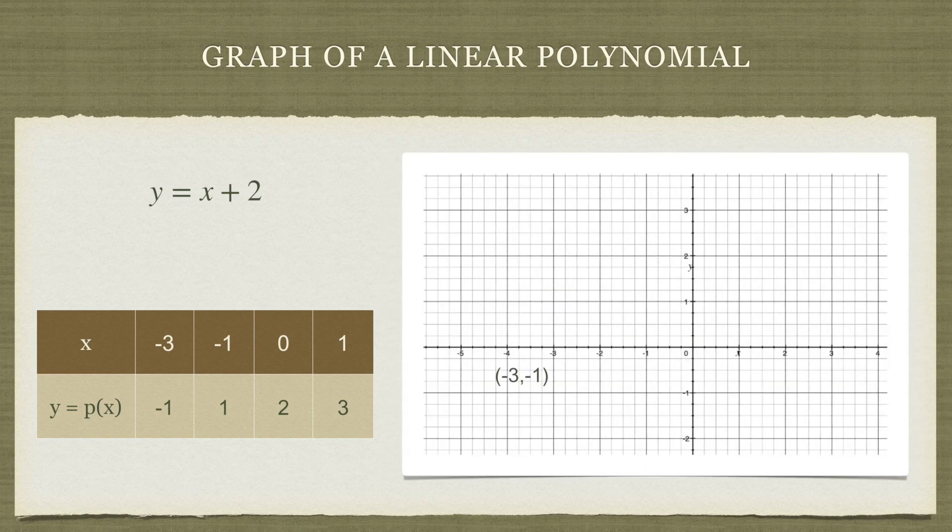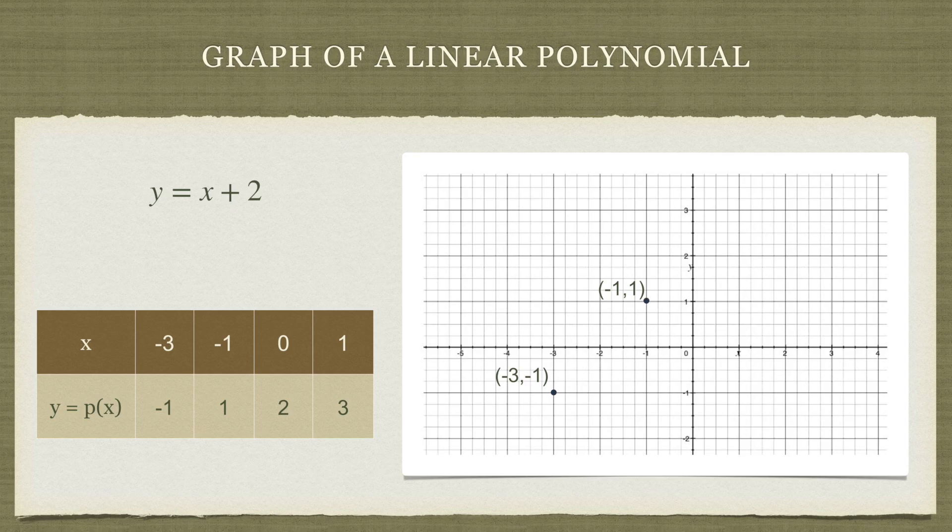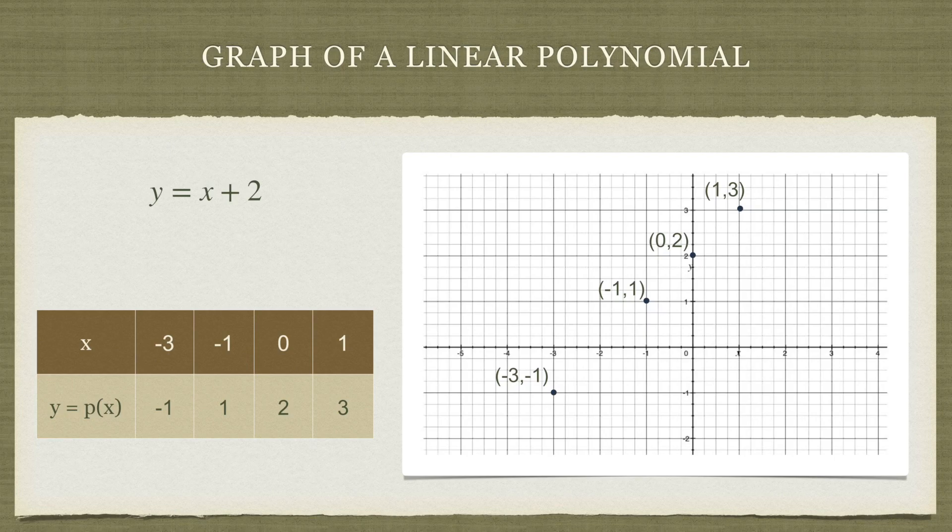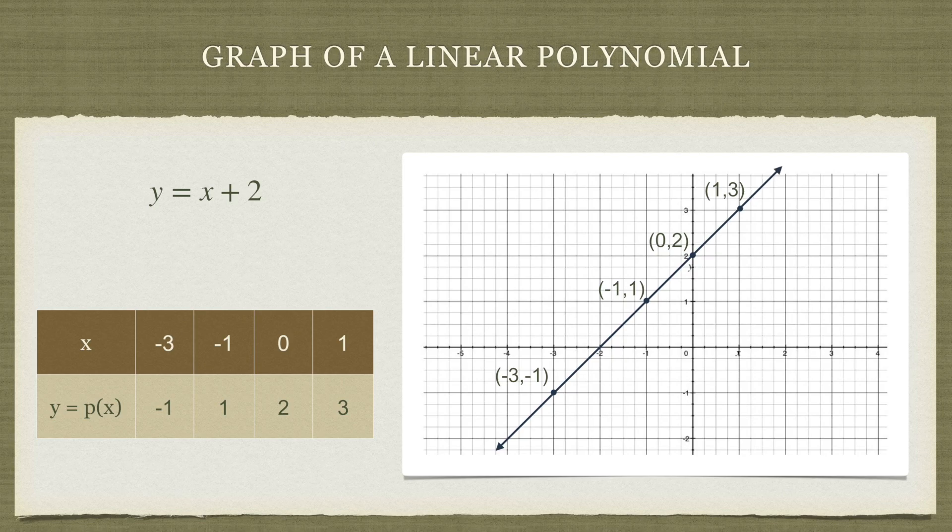Let's get ourselves graph paper here and plot each of these points on the graph. So (-3, -1) is this, the second point is this, the third point is this, and the fourth point is this. Now we have to draw a curve that passes through all of these four points. What we get is this straight line. This line is the graph of the linear polynomial x + 2.